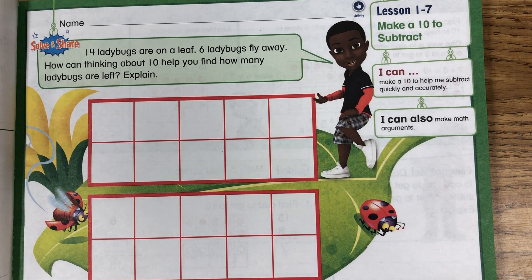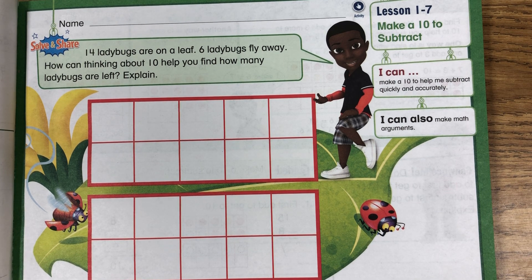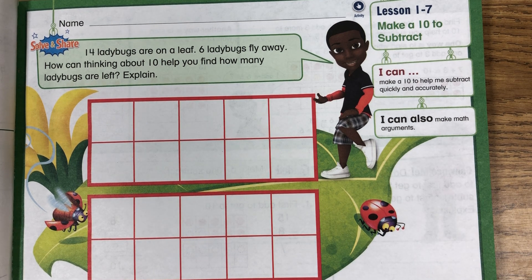Solve and share: 14 ladybugs are on a leaf. Six ladybugs fly away. How can thinking about 10 help you find how many ladybugs are left? Explain.